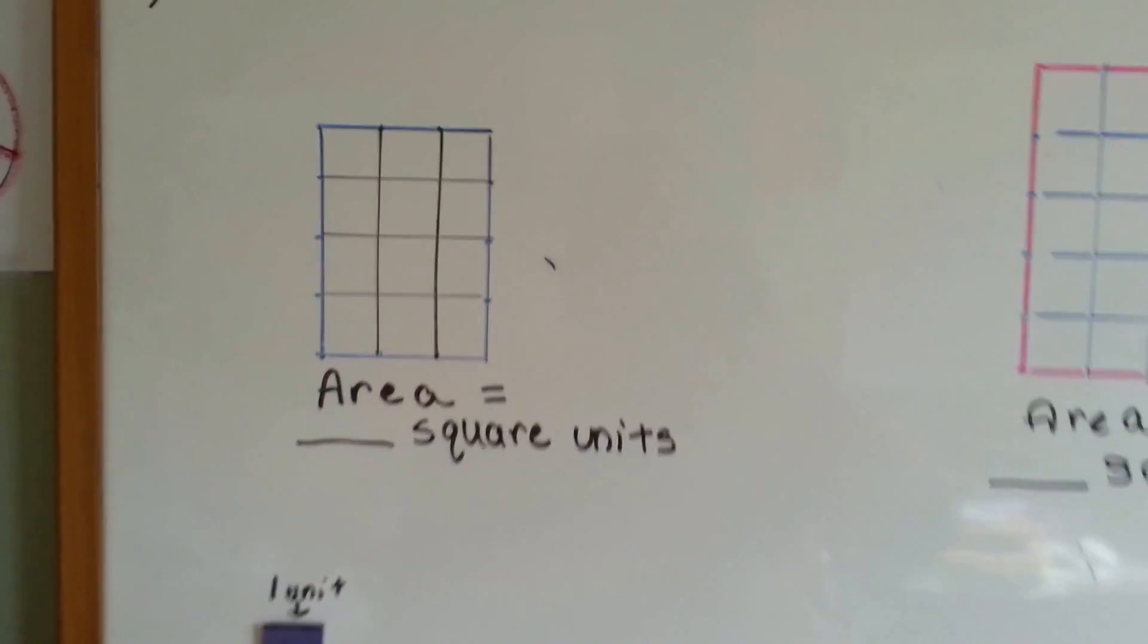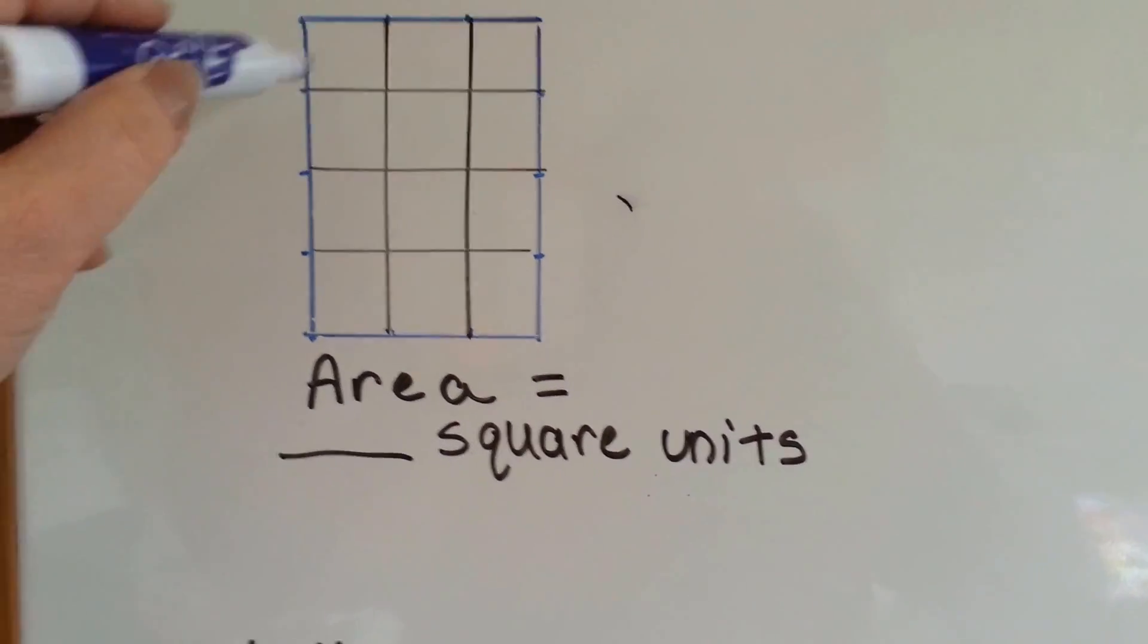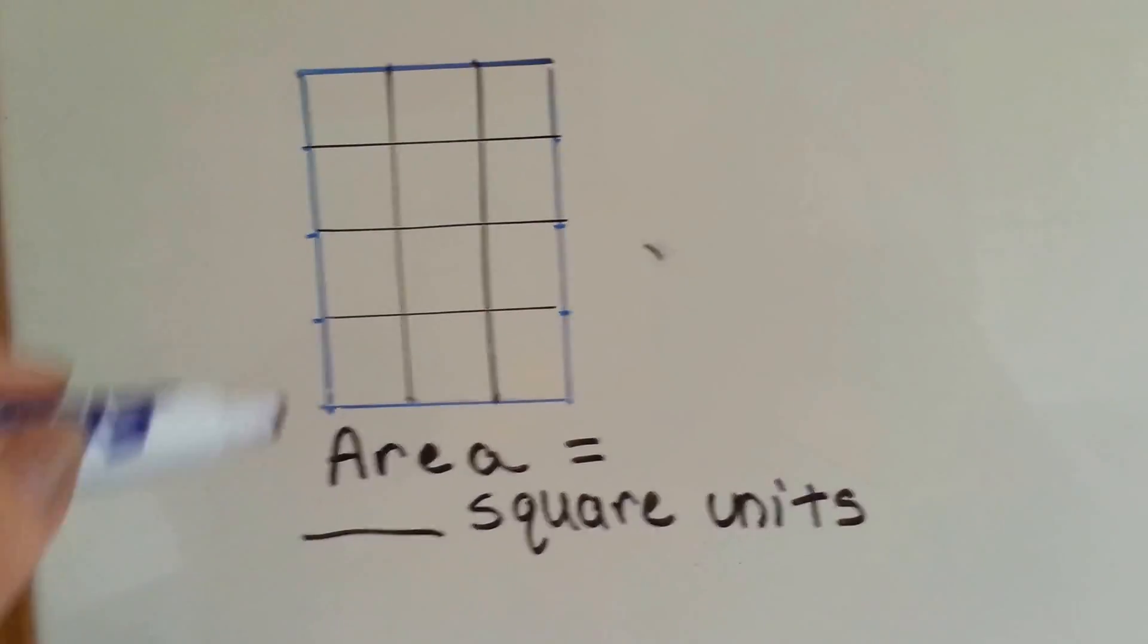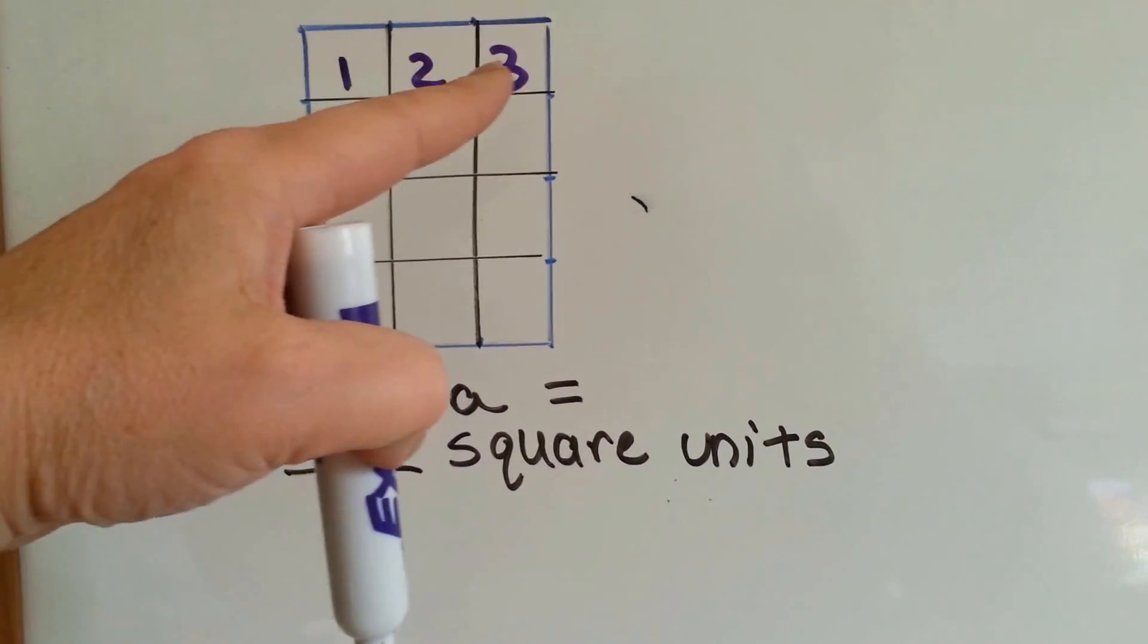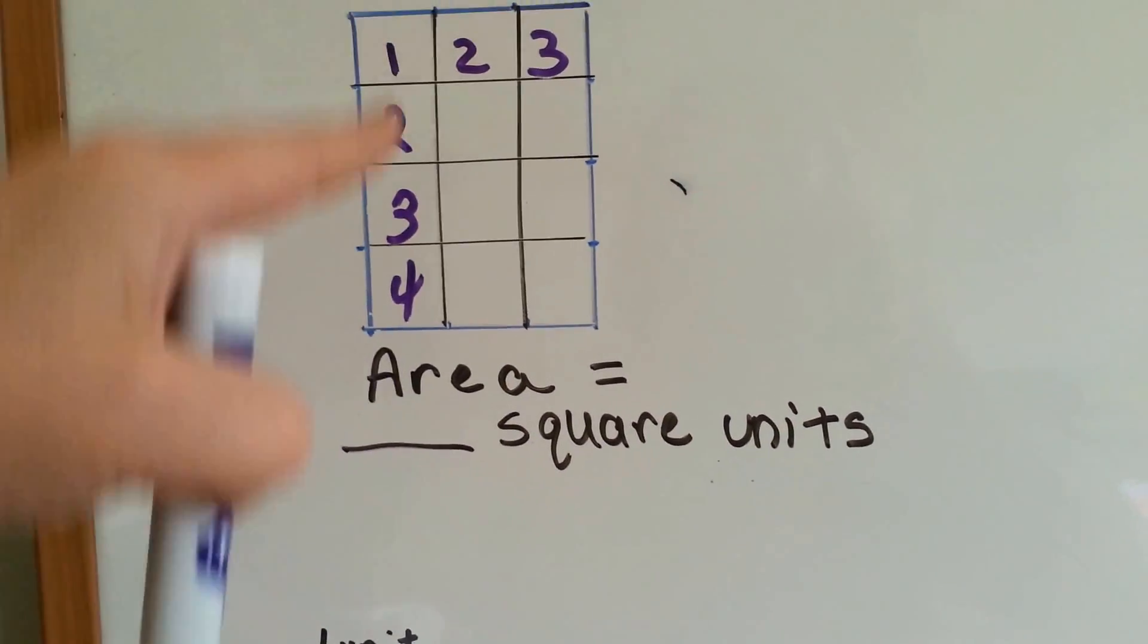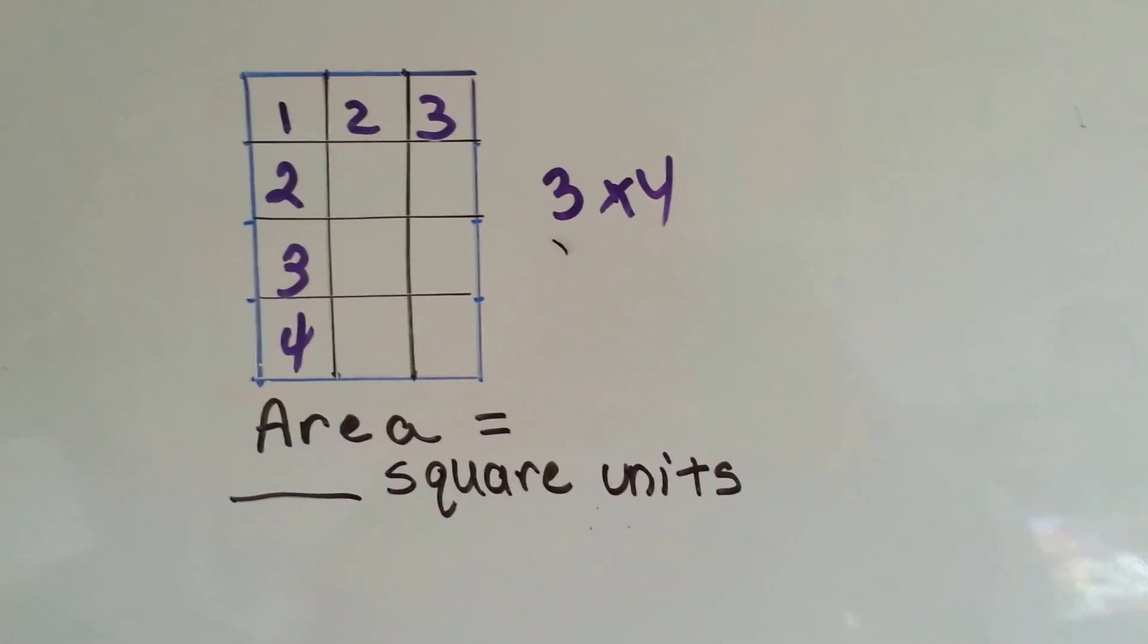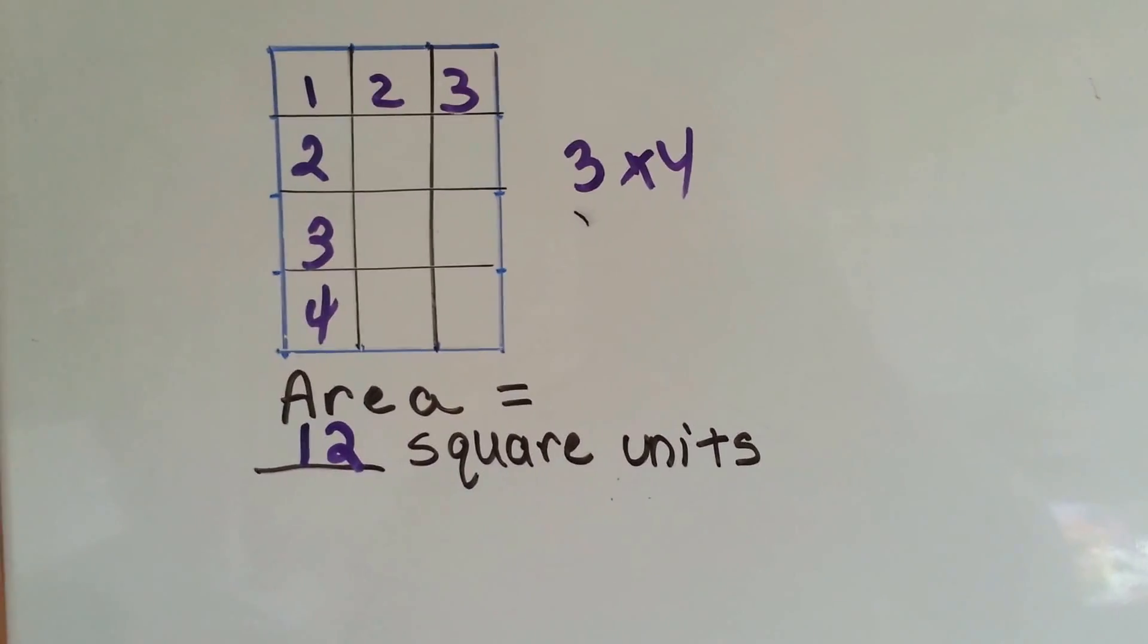So if we were to look at a rectangle and we wanted to figure out what its area is, we would break it into its units and look to see how many squares are on the inside. We're not counting the perimeter of the outside. We're counting how many of these squares are on the inside. There's 3 going across and 4 going down. So what we could do is we could say 3 times 4. And what is 3 times 4? 3 times 4 is 12. So this rectangle has 12 square units.